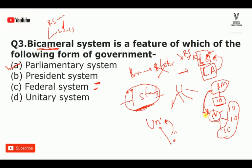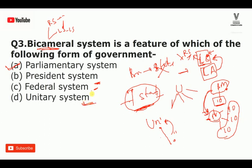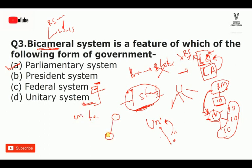Federal means the head driver is not fully in control — states could be more independent. But in India, we don't have pure federal structure. Unitary federal means the union is supreme, but states have some power — that is India's quasi-federal nature.